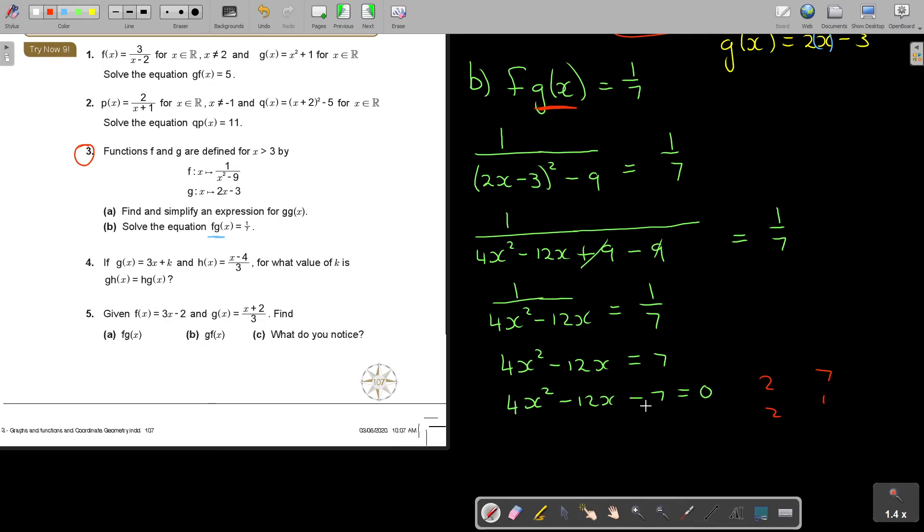And then I factorize. Just factorize. 7 and 1. And let's see, 2 and 2. Because it's a group B, so I must subtract. So 14 minus 2 is 12. Signs are different. And the biggest over cross gets negative positive. So I'm going to get 2x minus 7, 2x plus 1, and that's equal to 0. So 2x minus 7 is equal to 0, or 2x plus 1 is equal to 0.